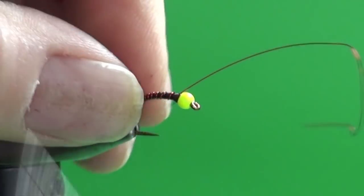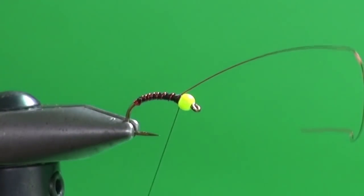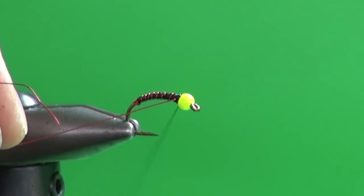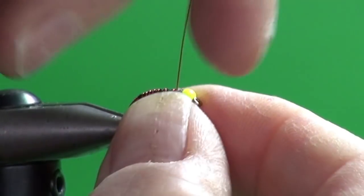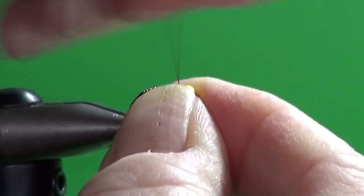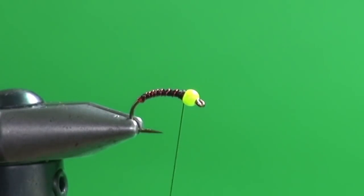Come up. A couple of wraps over top of the wire. A few directly in front. And then just put my thumbnail on that tie off point. Break away the excess.